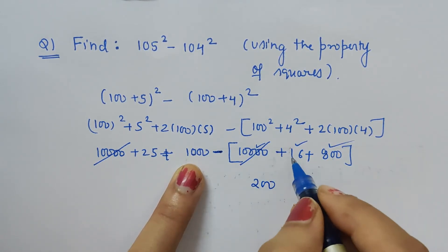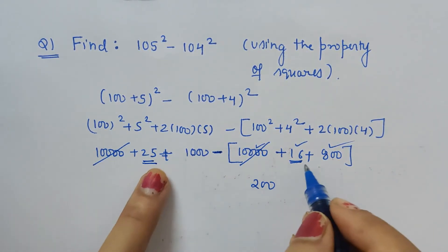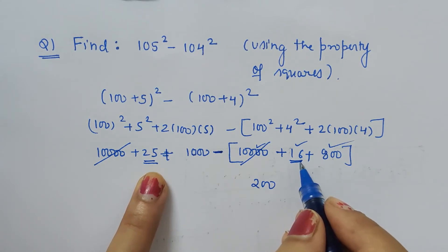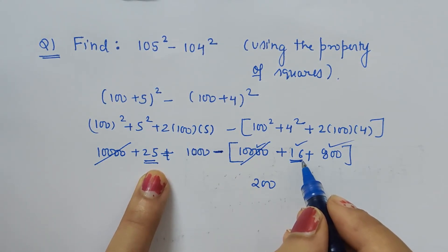We are left with 25 minus 16, which is 9, and we are left with 200.